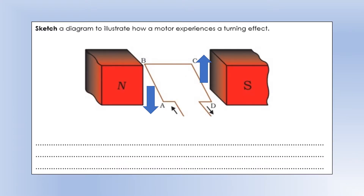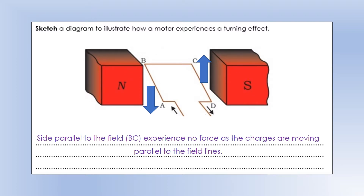Now we're going to look at an application of combining electromagnets with external magnetic fields: the electric motor. We have an external magnetic field with north and south poles. A current is sent through the wire going from A all the way around to D. The first thing to look at is side BC.